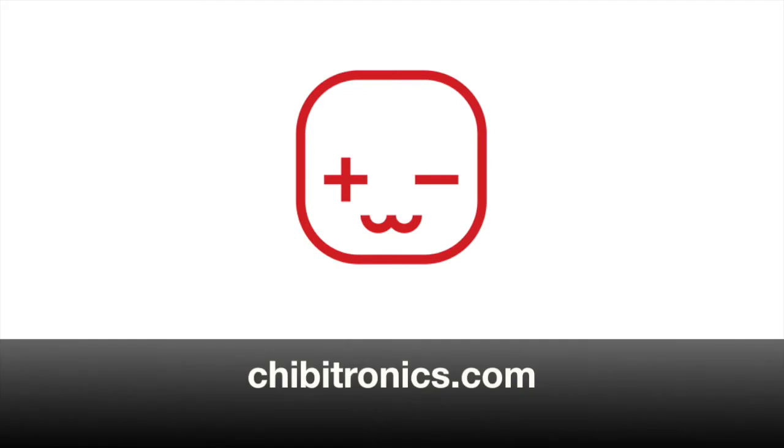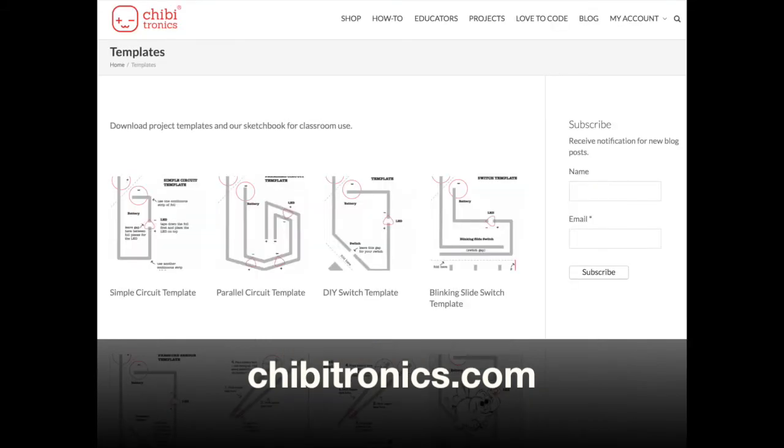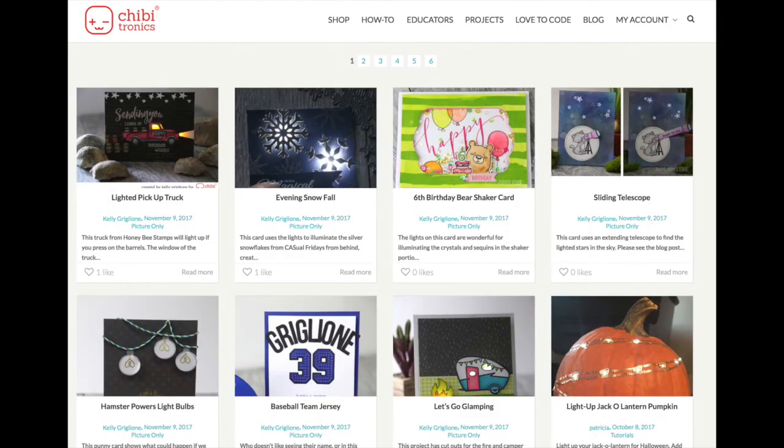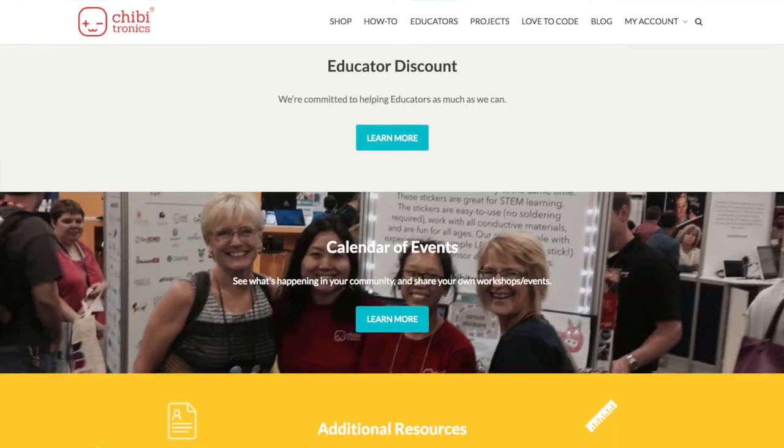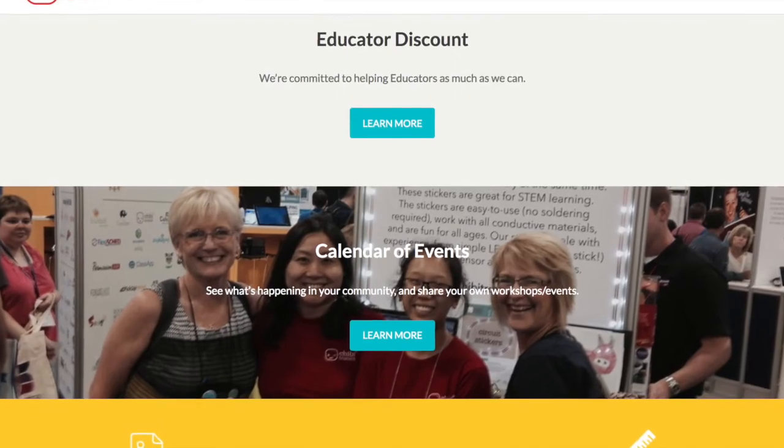So if you're ready to get started, you can head over to chibitronics.com where we have all of our tools and supplies for sale, as well as tons of resources for you to get started. In addition to our books and templates, we also have tons of tutorials that show you how to do all the activities in the books, as well as a projects gallery where everyone can submit their projects to inspire others. We also want to support teachers, so we give every educator a 20% discount. Come check it out!